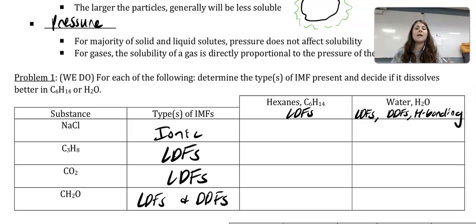Let's go through this together. When it comes to NaCl, since we said it's extremely polar, it will dissolve better with the water. Next, C3H8, we're looking for similar IMFs, so the hexane will be a better choice for the C3H8.